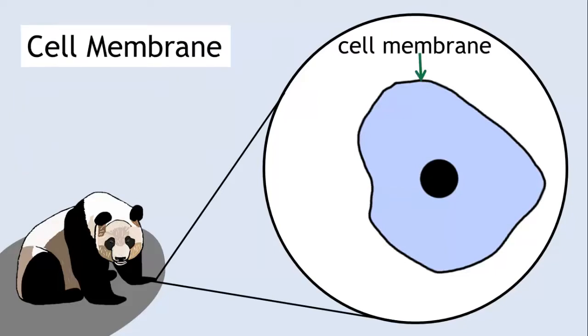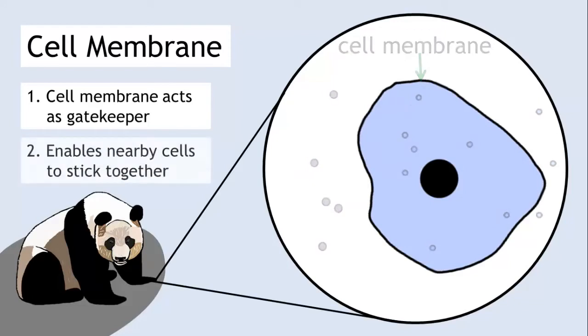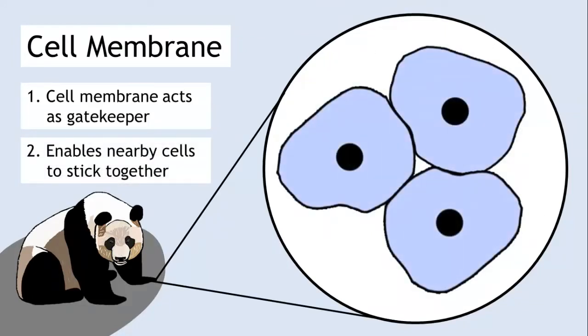The cell membrane, which is the border of the cell, acts as the gatekeeper and controls what enters and exits the cell, as well as enabling neighboring cells to stick to one another.